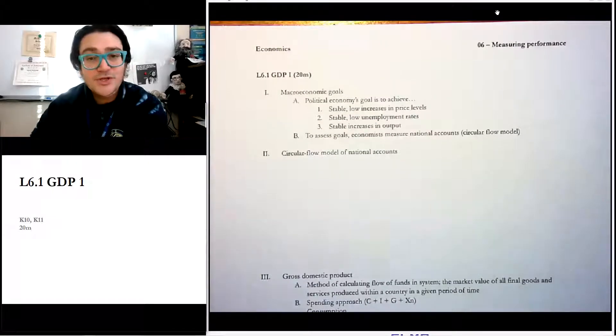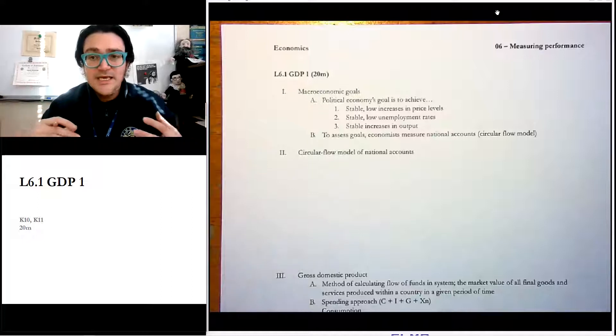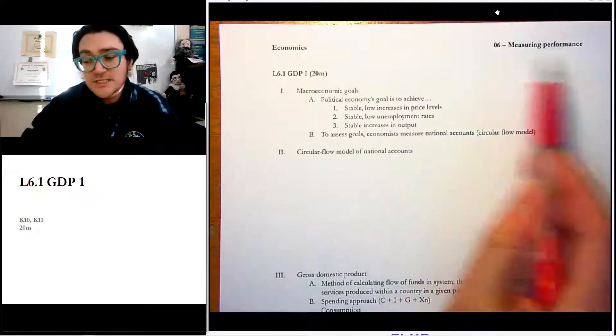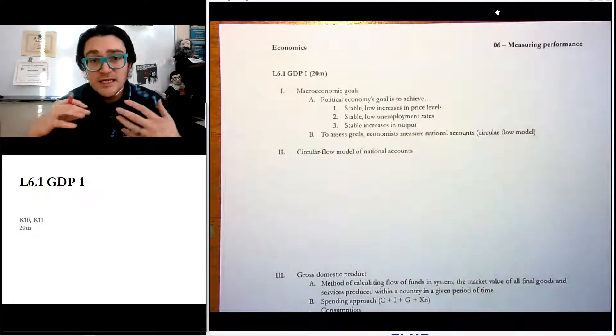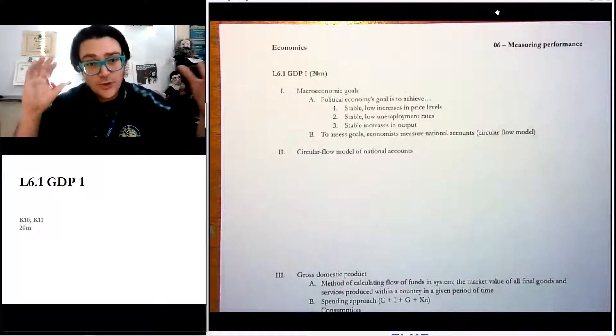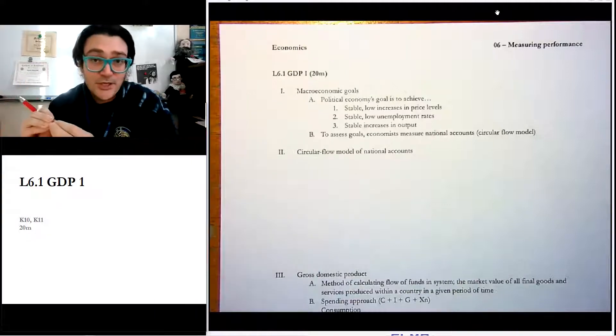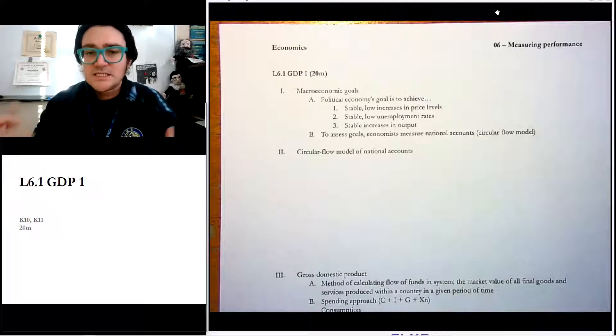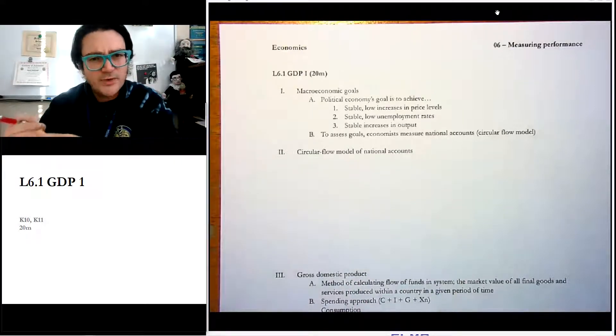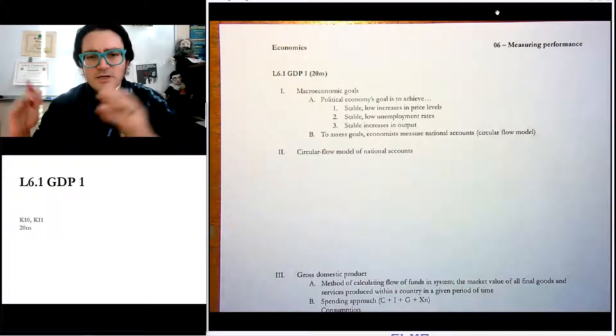Hello there. So in this video, we're going to do our very first topic in our very first unit of macroeconomics, which is measuring economic performance. And the first topic is gross domestic product - gross meaning total, domestic meaning what you make in your country, and product meaning stuff. Before we even get into the specifics of why we care about this thing called gross domestic product and all that, let's take the 30,000 feet level and think about macroeconomic goals.